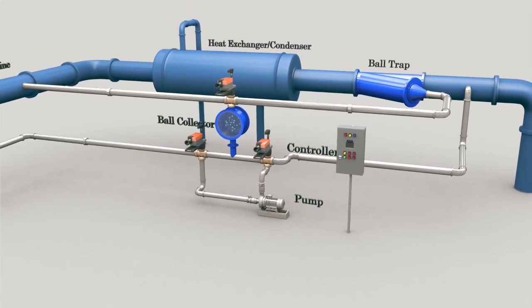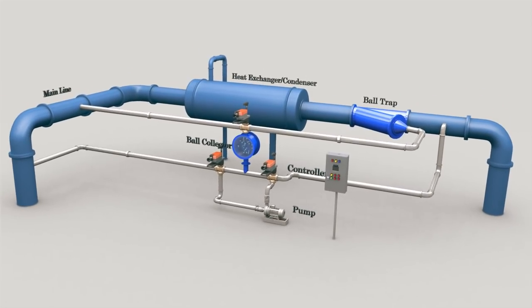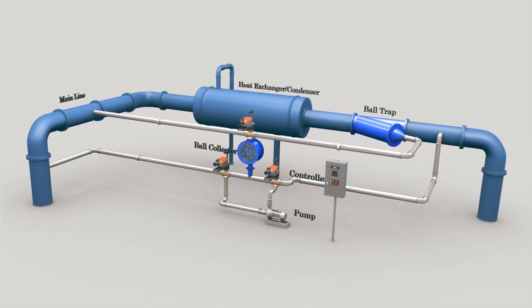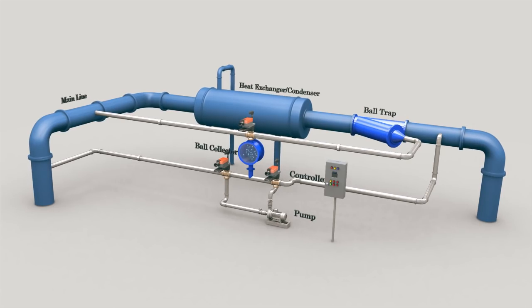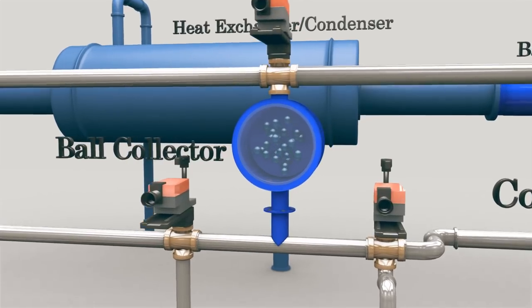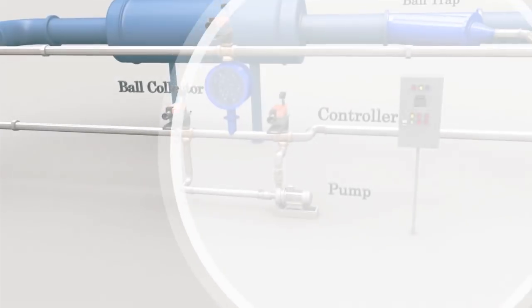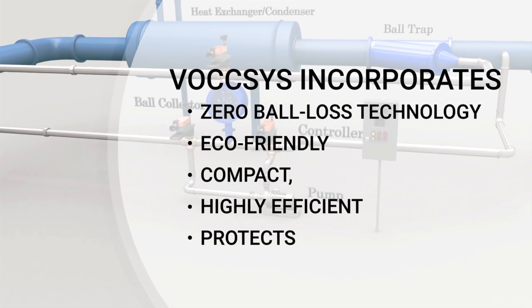Our Vulcan online condenser cleaning system, or BOXCS, is your contemporary solution. BOXCS uses sponge balls to provide you an online cleaning solution. BOXCS incorporates a zero ball loss technology and is eco-friendly, compact, highly efficient, and protects your heat exchanger tubes from damage.